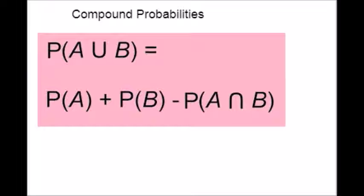Else, they are non-mutually exclusive. In case of non-mutually exclusive events, we have two types of events: independent and dependent. Independent events are the ones whose occurrence does not affect the occurrence of the other.